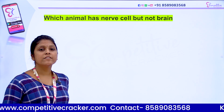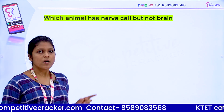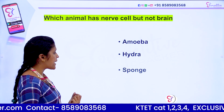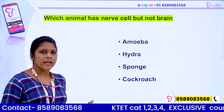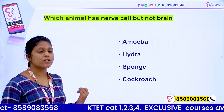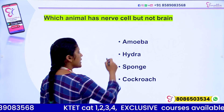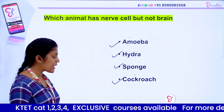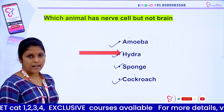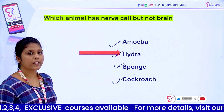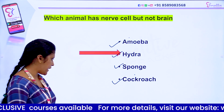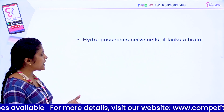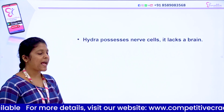The next question: Which animal has nervous cells but not a brain? Options are Amoeba, Hydra, Sponge, and Cockroach. Hydra is the organism which has nerve cells but not a brain.